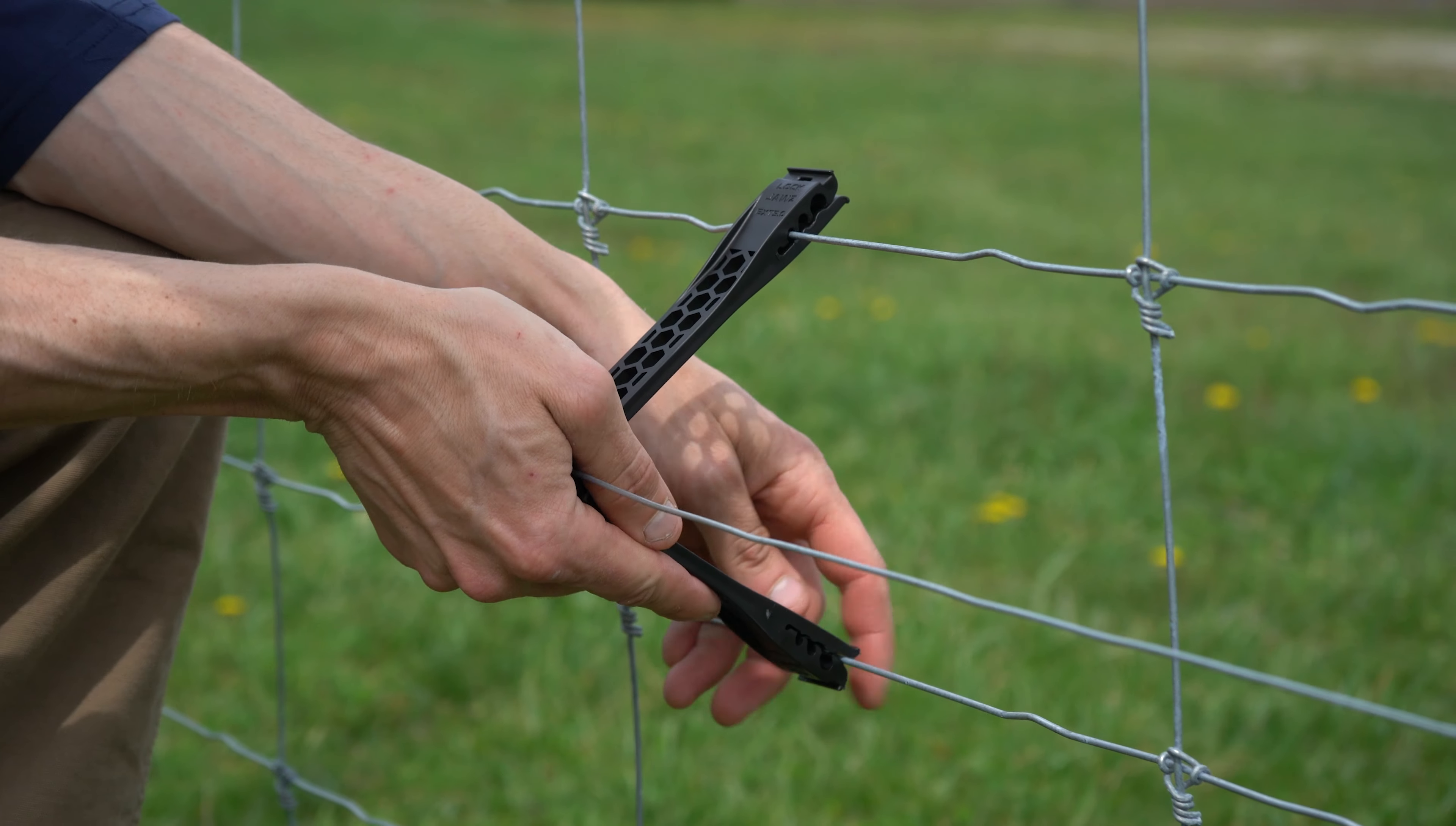These insulators attach with two points of contact on your woven wire fence or panel fencing up to 4 gauge, and they can span a graduated spacing gap of 4 inches to 8 inches.